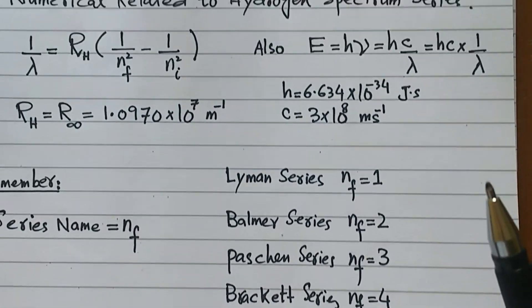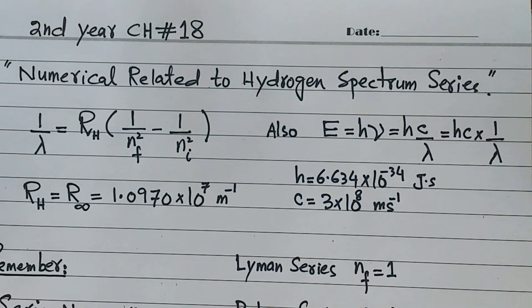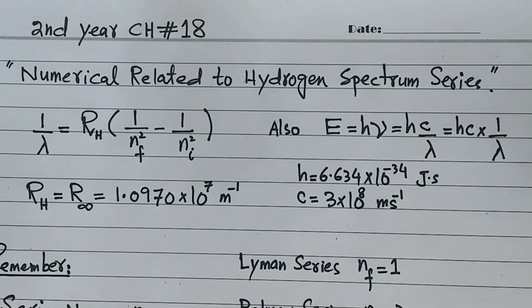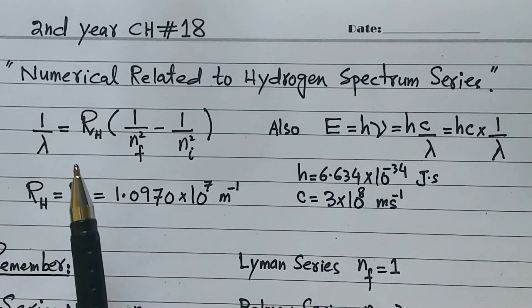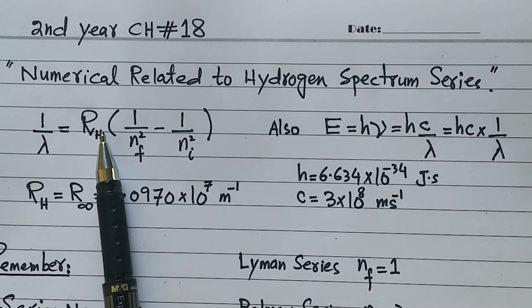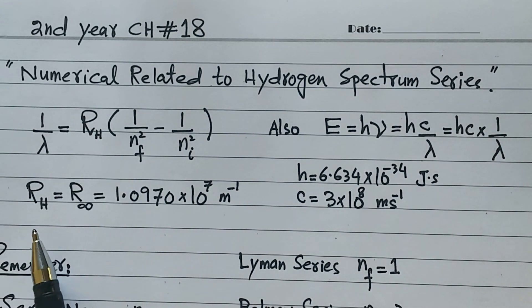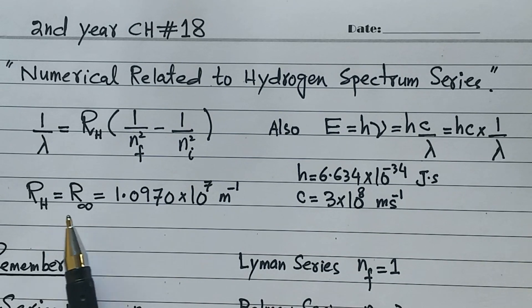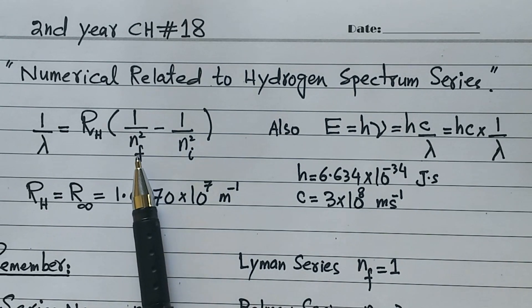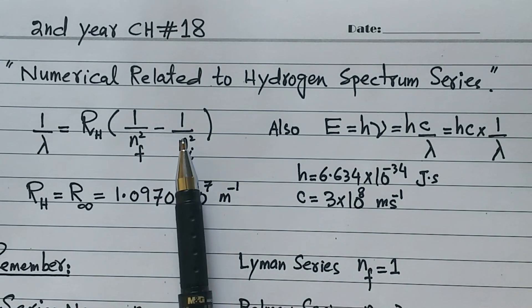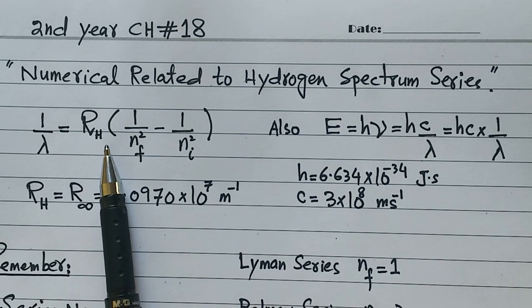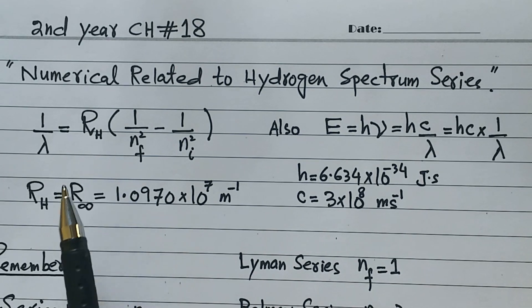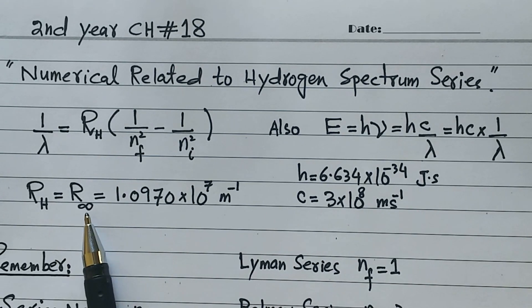We have a direct proof of an equation. One upon lambda is equal to RH, sometimes written as R infinity, multiplied by one upon NF squared minus one upon NI squared. We are talking about RH, or what some call R infinity — this is a given value.